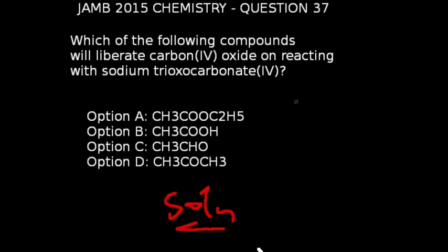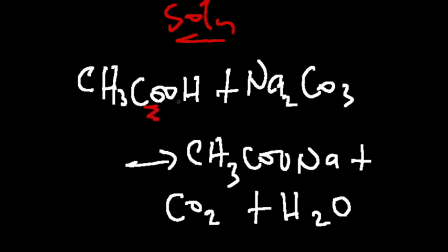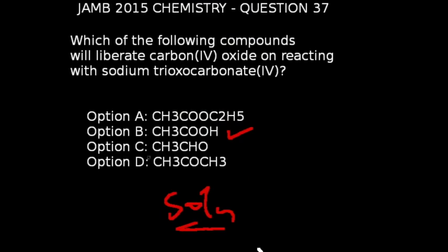Question 37 of JAM 2015 chemistry exams: Which of the following compounds will liberate carbon dioxide on reacting with sodium trioxocarbonate (Na₂CO₃)? The correct answer is option B, which is ethanoic acid. When ethanoic acid reacts with sodium carbonate, the products are sodium ethanoate, carbon dioxide, and water. This confirms option B.